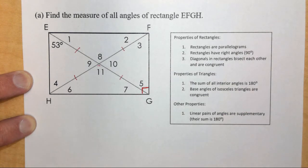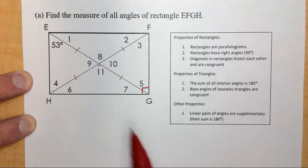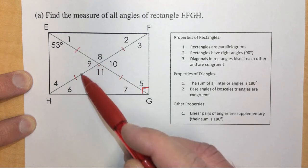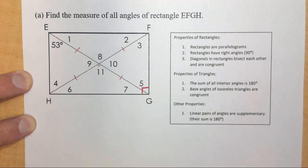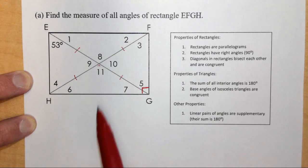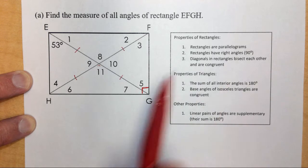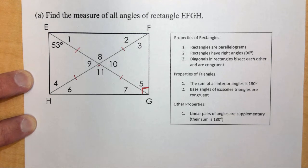So angles one and two have to be congruent, and angle four has to be congruent to the given 53 degrees. To solve the angles in the middle, we can use the property that linear pairs — two angles side by side creating a straight line — are supplementary, meaning they must add up to 180 degrees. We're only given one angle of 53 degrees, but we can use these properties to solve for the rest.